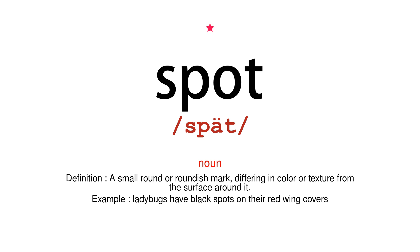A small round or roundish mark, differing in color or texture from the surface around it. Ladybugs have black spots on their red wing covers.